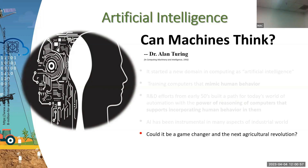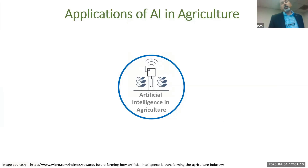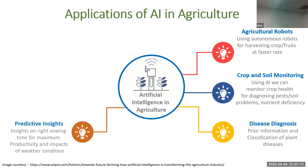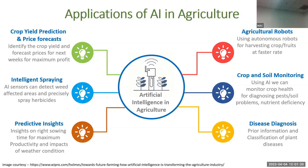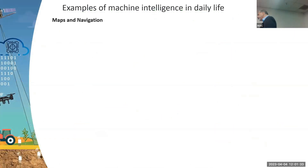AI has the potential to be a game changer for agriculture. Before addressing the complex possibilities, consider everyday examples: GPS navigation on our phones uses machine learning to track routes, detect anomalies, reroute automatically, and process real-time data — though as demonstrated when someone walked 100 cell phones through a German street and convinced Google Maps the road was congested, the technology can be manipulated.